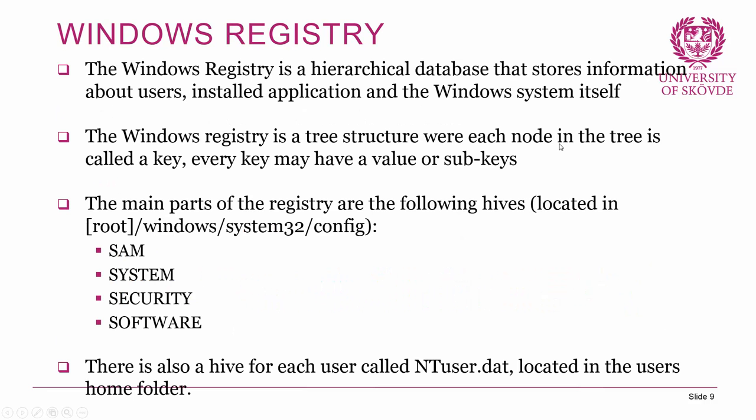The Windows registry is a hierarchical database that stores information about users, installed applications, and the Windows system itself — basically all settings you set in Windows are stored there. The registry is structured as a tree with nodes where each node is called a key, and every key may have values or subkeys. There are four main registry hives of interest for forensic examiners, located in Windows\System32\config: SAM, SYSTEM, SECURITY, and SOFTWARE. Additionally, there is one hive per user called ntuser.dat, located in each user's home folder.